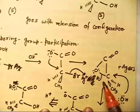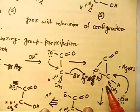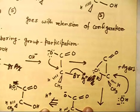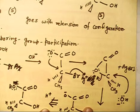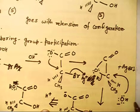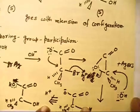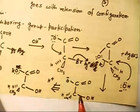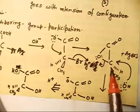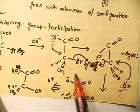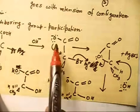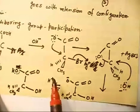Now in the next step, OH⁻ cannot attack from this side — attack on a three-membered ring always happens in anti fashion. I have already explained this in class: this is like cyclic bromonium ion, epoxide, mercuronium ion, or BH3 addition — all explained in the stereochemistry chapter. So OH⁻ attacks here from the anti face, and this group goes to this side, giving me a COO⁻ product.